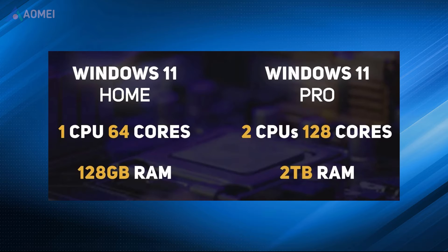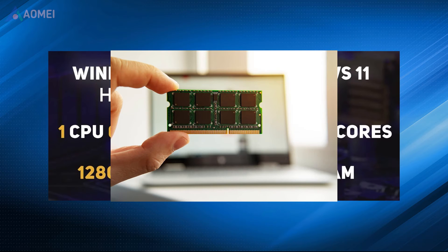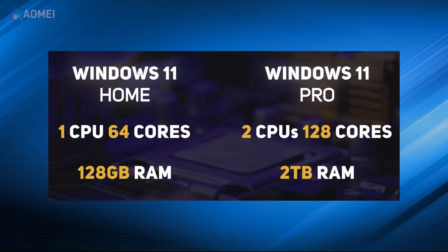Number 2: RAM. Windows 11 Home has a maximum memory limit of 128GB RAM, while the Pro Edition can support up to 2TB. If you have more RAM capacity, your computer can handle multiple tasks and applications simultaneously without slowing down or experiencing performance issues. However, 128GB of RAM in Windows 11 Home Edition can let you have an ample amount of memory that exceeds the requirements of typical daily computer usage.